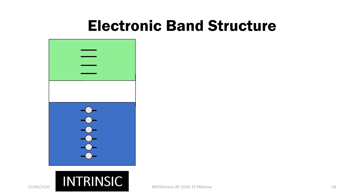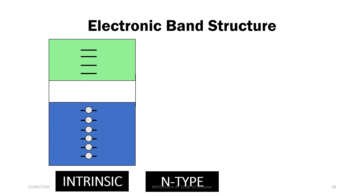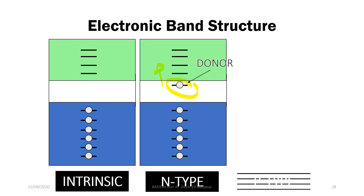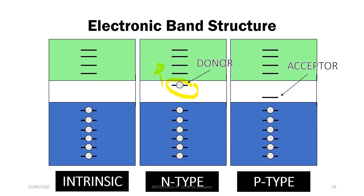The addition of dopants into our semiconductors actually changes the electronic band structure. If we add dopants into our system, we essentially create extra energy levels inside your band gap. For N-type semiconductors, the addition of a donor dopant creates an energy level near the conduction band, placing an extra electron near the bottom of the conduction band, making it easier to create free electrons. For P-type semiconductors, we add an extra empty state near the top of the valence band, making it easier for electrons in the valence band to move up to an empty state, allowing the creation of free electrons for conduction.